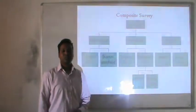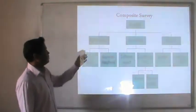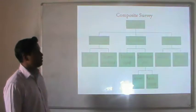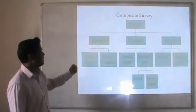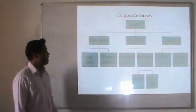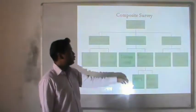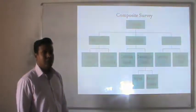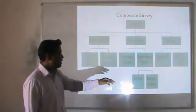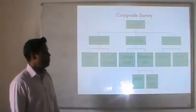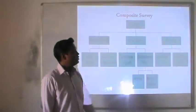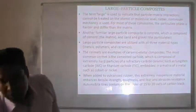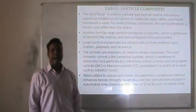The classification of composite materials is generally divided into three types: particle reinforced, fiber reinforced, and structural. Particle reinforced is further classified into large particle and dispersion strengthened. Fiber reinforced is further classified into continuous (aligned) and discontinuous (short). Discontinuous is again classified into aligned and randomly oriented. Structural is divided into laminates and sandwich panels. We will first discuss large particle composites.